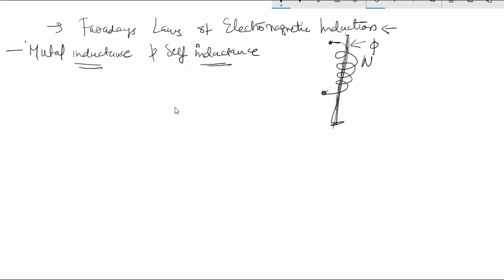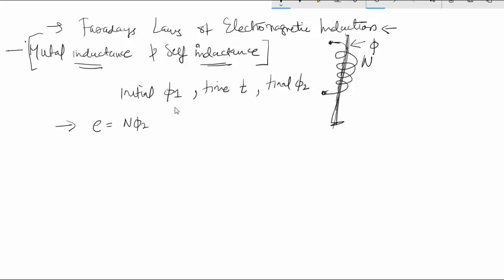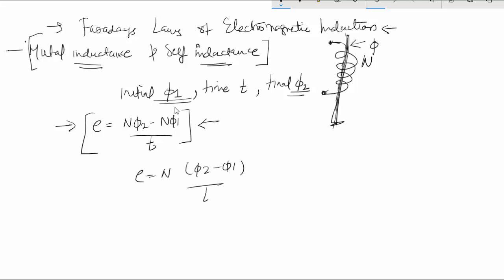If the flux initially was phi 1 and after a time t — the time of observation — the flux changed to phi 2, then Faraday's law says that an EMF will be induced in the circuit equal to the rate of change of flux linkage: E = (N·phi2 − N·phi1) / t, which equals N(phi2 − phi1) / t, given in volts.